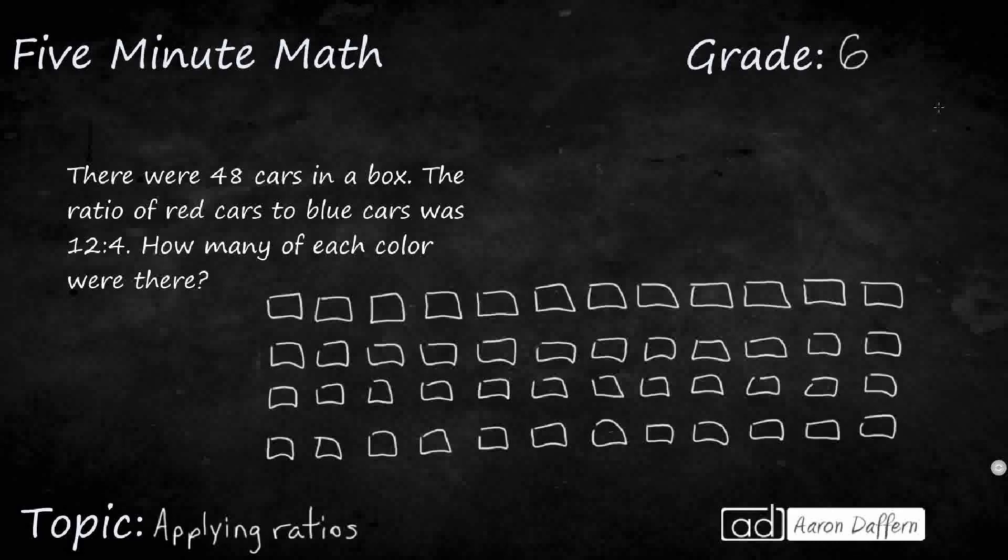So in this example, they give us the total. They say there are 48 cars in a box. So I've drawn 48 here in an array of 4 rows, 12 in each row, and they give us the ratio of red to blue, and they want to know how many of each color there are. Well, there's two different ways to do that. If you want, you can always draw a picture.